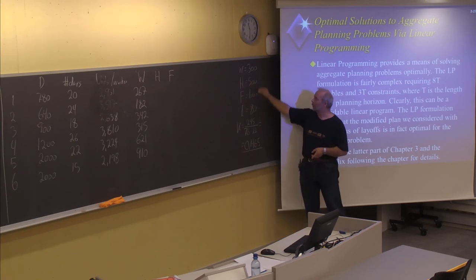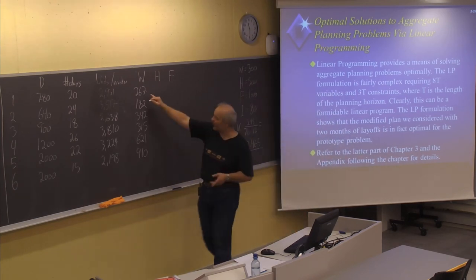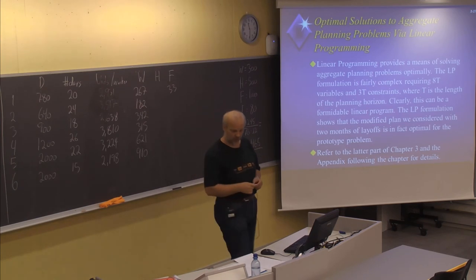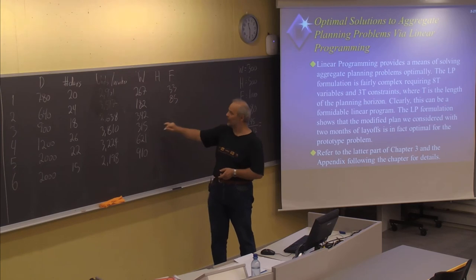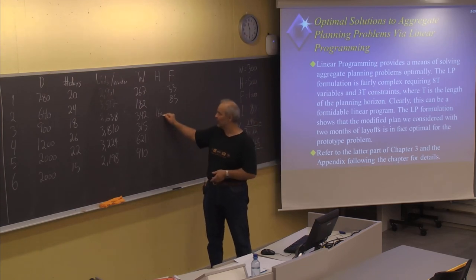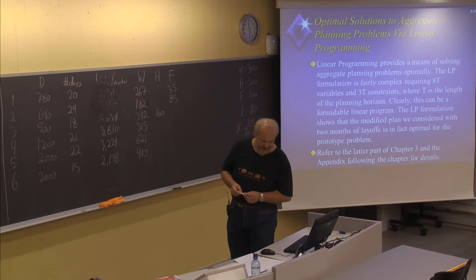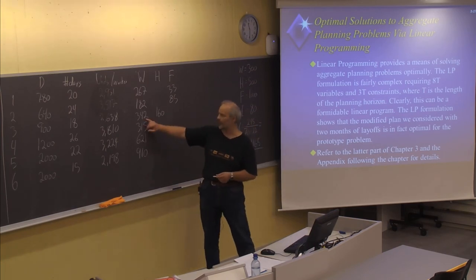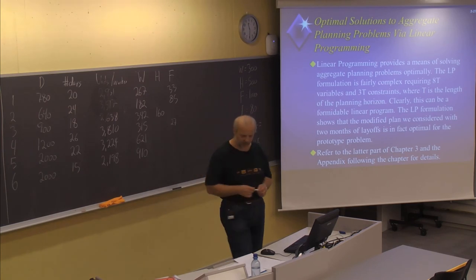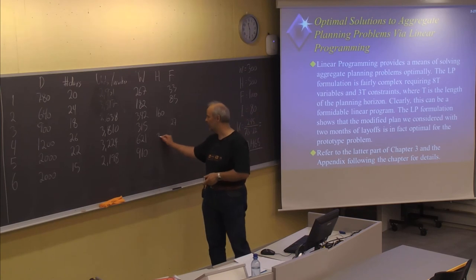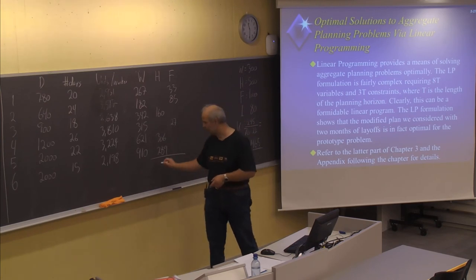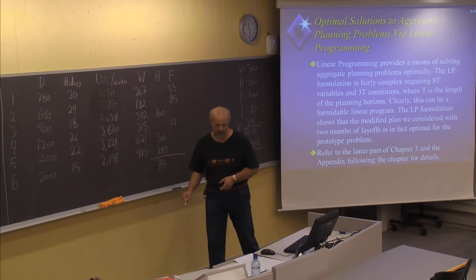Starting with a workforce of 300, we need to fire 33. Then from 267 down to 182, we get rid of 85 more. Then up to 342, which means hiring 160 extra. Then 27 less from that month to the next. And then we need to hire many people in May and June — first 306, then 289. This makes a total of 755 hired and 145 fired.